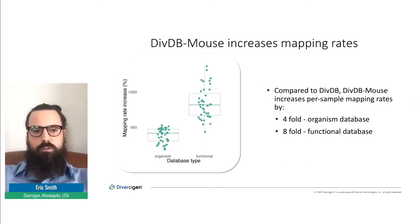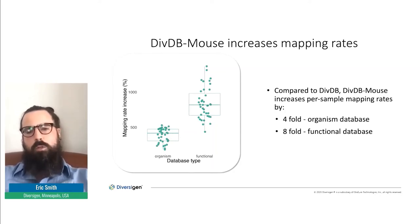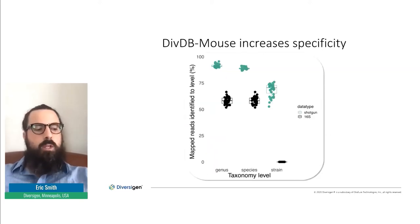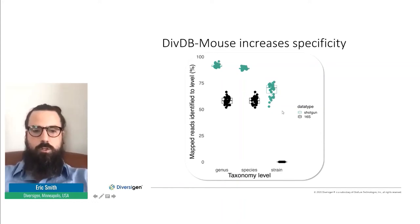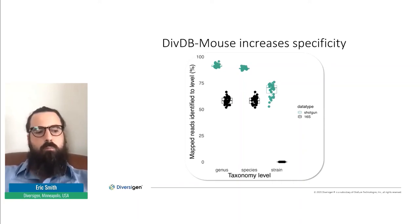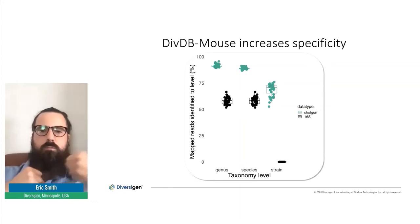On a per-sample basis, we see about a four-fold increase in mapping rates when we map to the organism database, and about an eight-fold increase when we map to the functional side of the database. Importantly, when we take samples profiled via 16S and also profiled by whole genome sequencing, we see a huge increase in specificity at genus, species, and strain levels of taxonomy with DivDB Mouse versus 16S profiling — really being able to tease apart different species or even different strains that might be involved in the phenotypes you're seeing.